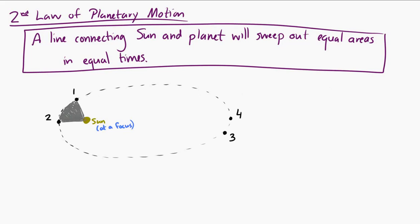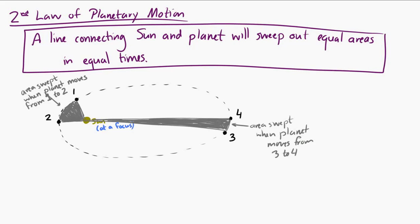What this law is saying is that if this area right here, for when the planet goes from 1 to 2, this area that's swept out by a line connecting the planet and the sun, if that area is the same as the area here that's swept out by a line connecting the sun and the planet and it goes from 3 to 4, if those areas are the same, then it takes the same amount of time to go from 1 to 2 as it does to go from 3 to 4.